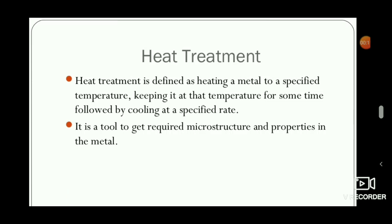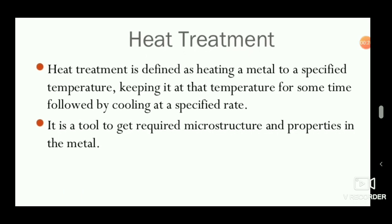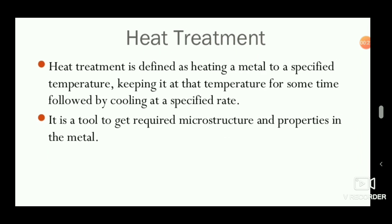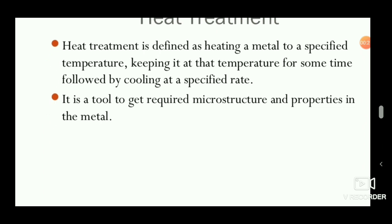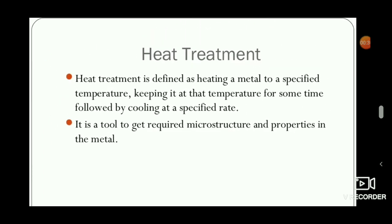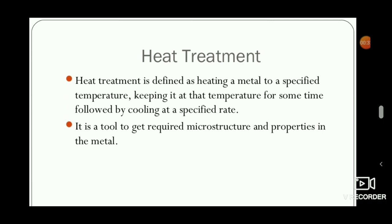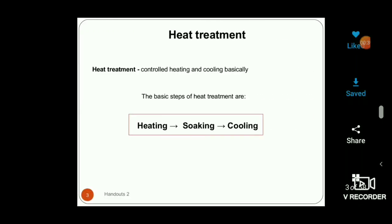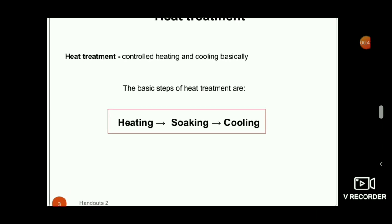Welcome to Engineering Study Materials. Today we are going to discuss the heat treatment process. Heat treatment is a process where a metal is heated or cooled to a specified temperature to get the required microstructure and properties. By using heat treatment, we can change the metal's properties — making a hard metal soft, or a soft metal hard.